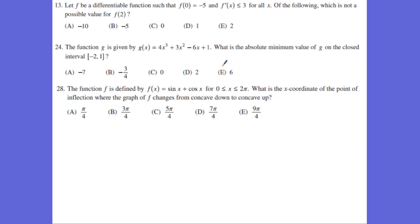I grouped these three problems together and I'm going to go through all three of them somewhat together. Number 13: we have f of 0 is equal to negative 5, f prime of x is going to be less than or equal to 3, and I want to know which is not a possible value of f of 2. I'm going to use the mean value theorem, and I'll pick this value right here.